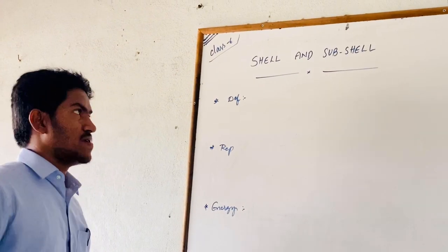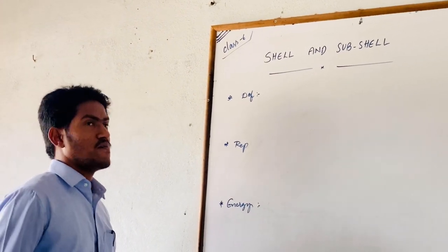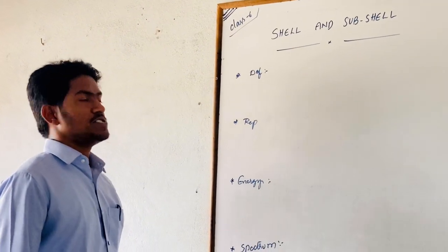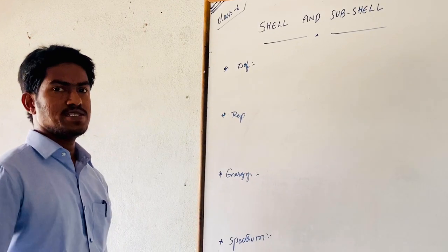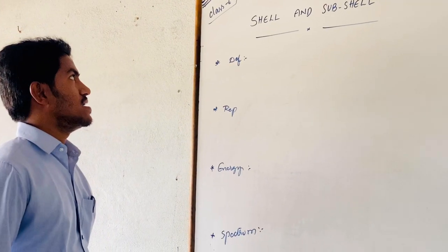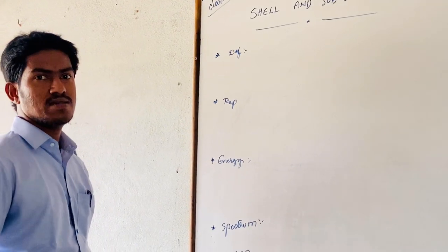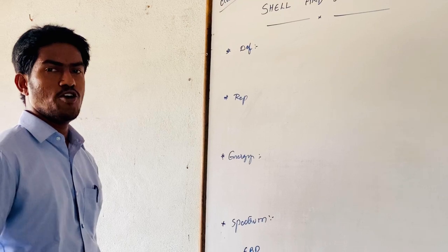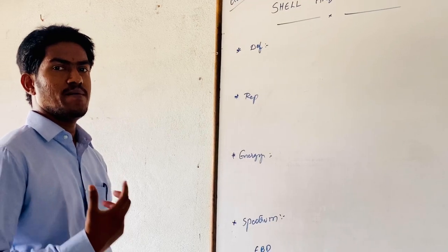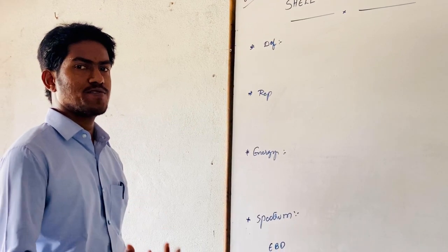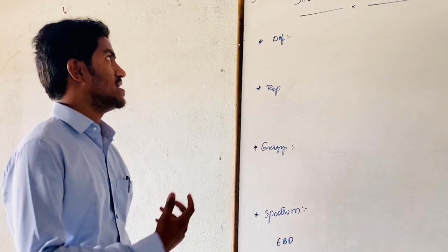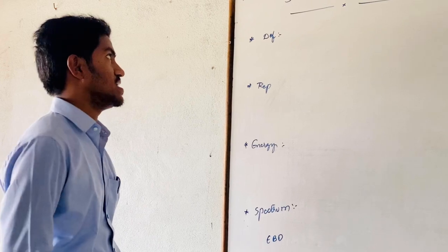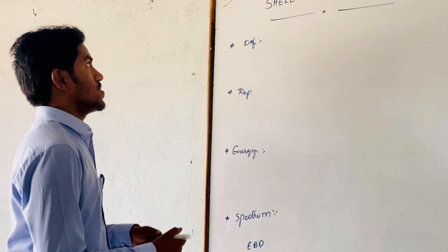In the previous class, we discussed the definition of subshell and shell — what are the other names, how they are represented, and how many maximum electrons are present in a shell as well as a subshell.